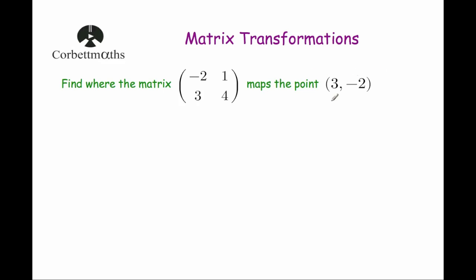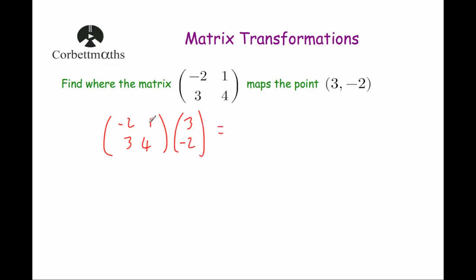To find where this point will move to after the matrix is applied, we simply multiply the point by the matrix. So let's write down our transformation matrix: minus 2, 1, 3, 4. And then we'll write down our point as a matrix: 3, negative 2. If you need a recap, watch the Corbin Maths video on multiplying matrices for more detail.